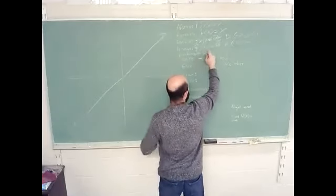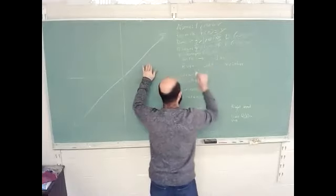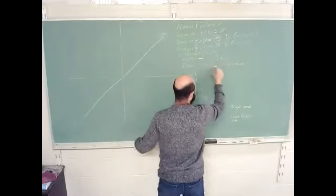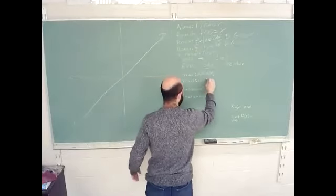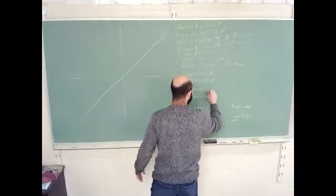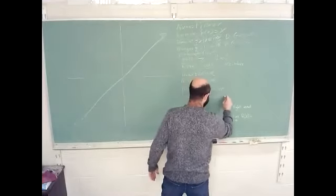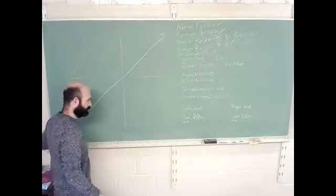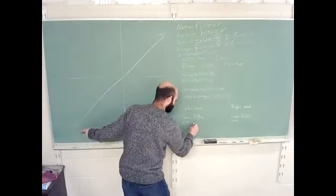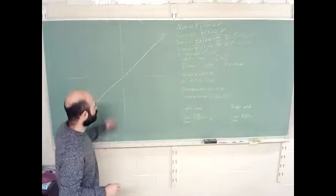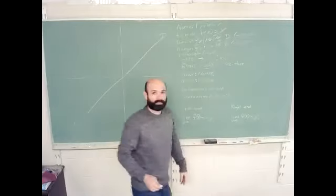The y-intercept is (0, 0). This function is onto and one-to-one. It's not an even function — it is odd. It has no max and no min. It's never decreasing — it's increasing the entire time. The left end goes all the way down to negative infinity, and the right end goes all the way up to positive infinity. That's the linear function.